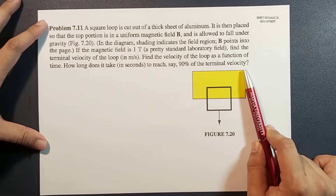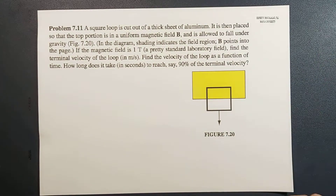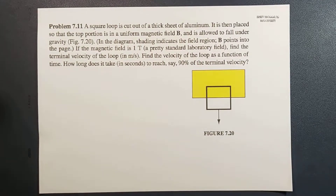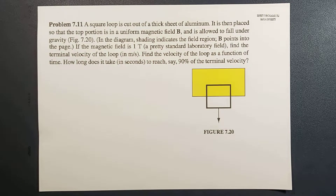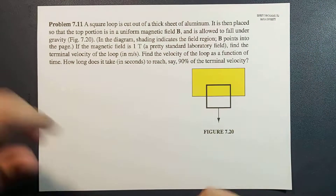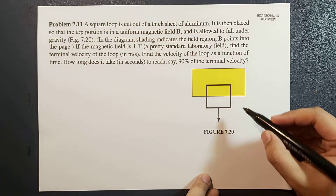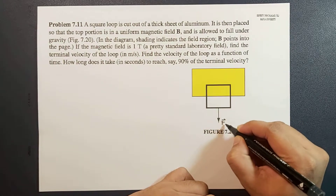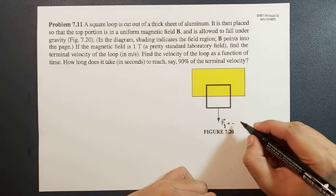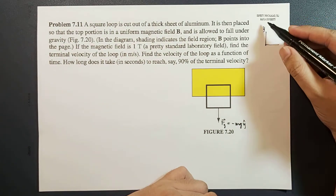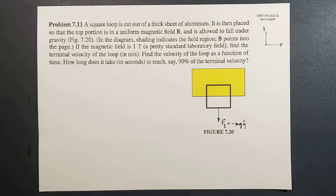First, let's start with calculating the terminal velocity. We're not going to use any values here — just give you the expression, and for your problem set you'll calculate the actual terminal velocity given a set of constants related to the thick aluminum sheet. In this case, this is your aluminum square loop and it is under the influence of gravity, so the gravitational force is equal to negative mg ŷ. We set this as our y-direction and the horizontal as our x-direction.